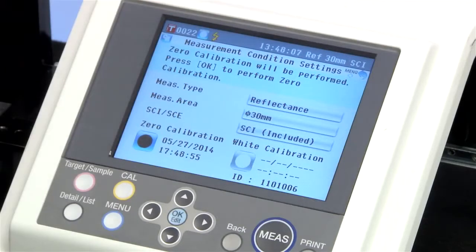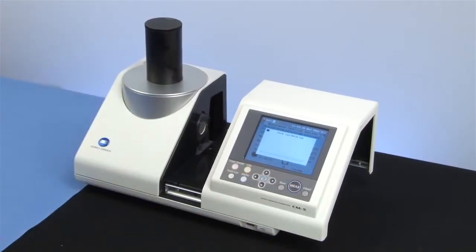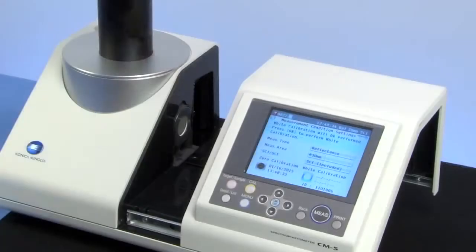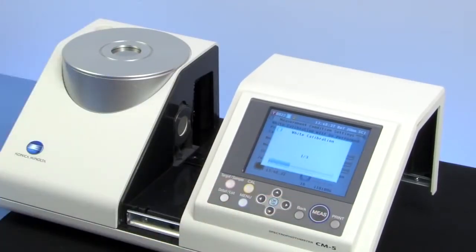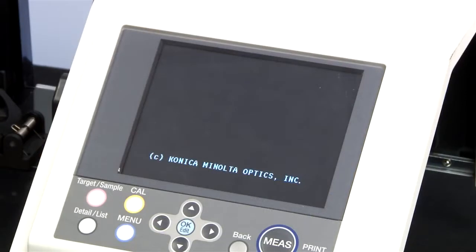To begin, just switch the instrument on, perform zero calibration, and then white calibration before each color measurement session. There is also an option to perform white calibration automatically.